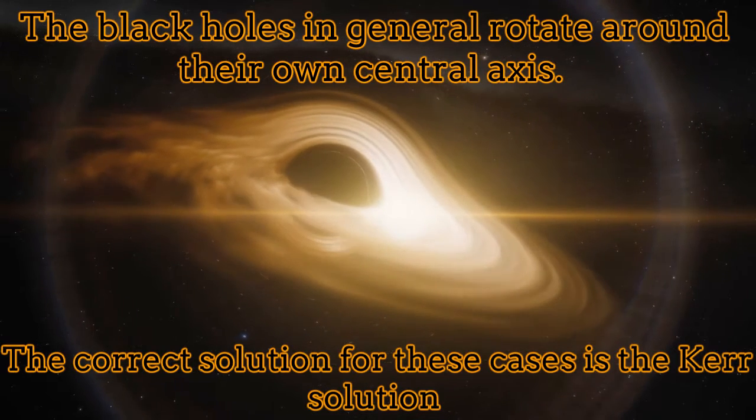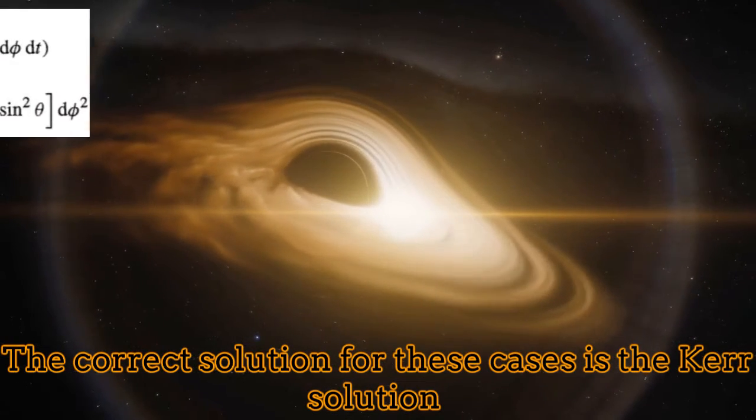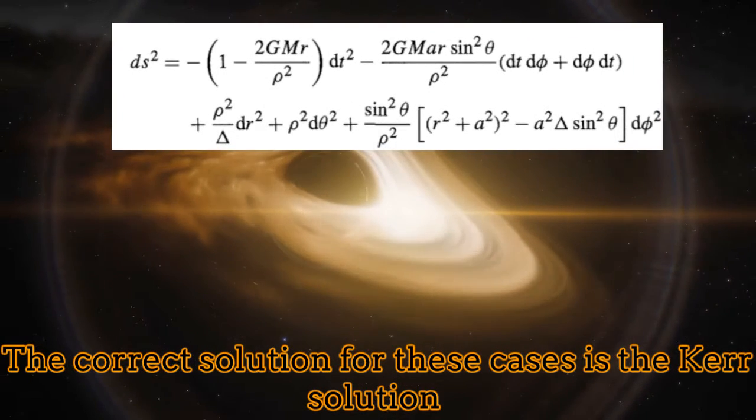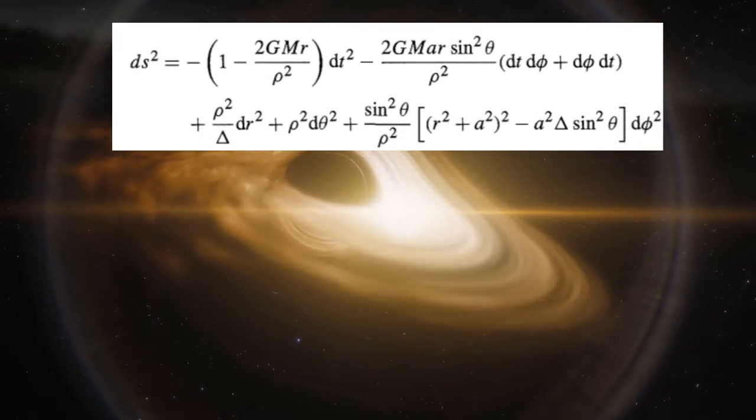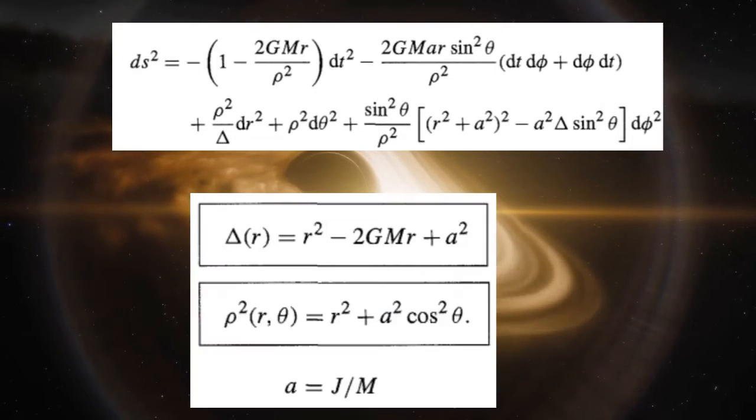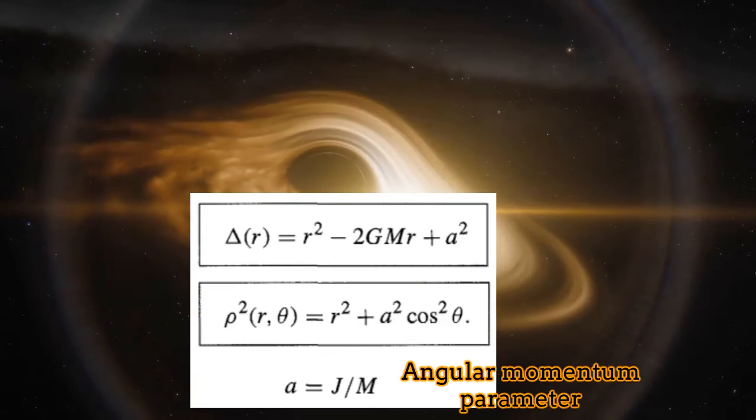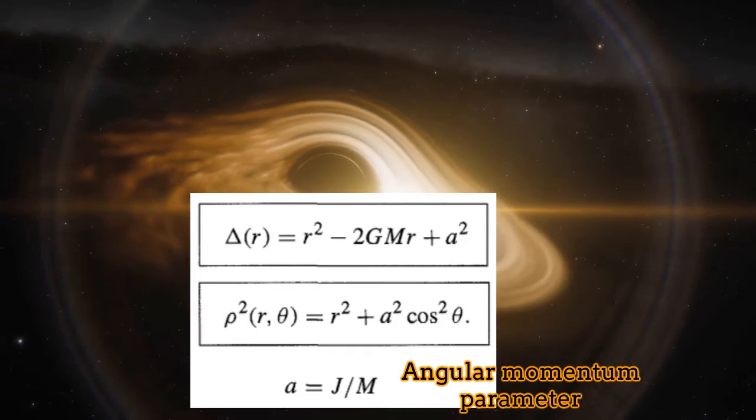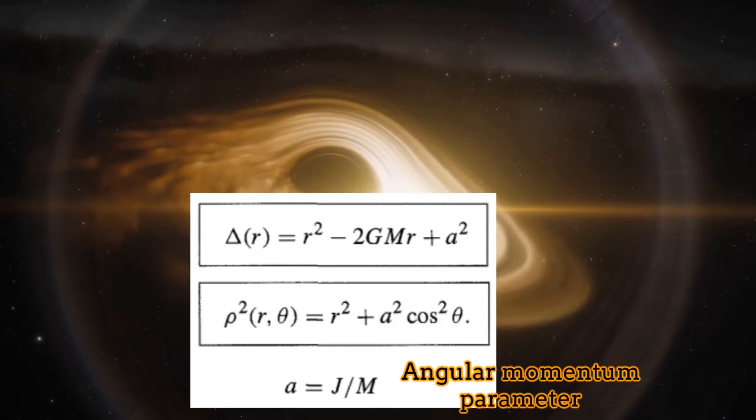The correct solution for this kind of system is the Kerr solution. The solution is not spherically symmetric, instead it is axially symmetric, containing in this way a new parameter, namely the angular momentum of the black hole.